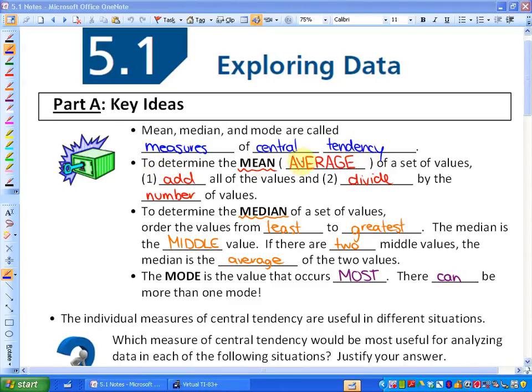To determine the mean, another word for mean is average, of a set of values, what you do is you add all the values and then divide by the number of values. The median of a set of values orders the values from the least to the greatest, and the median is the middle value. If there are two middle values, the median is the average of those two values. And finally, the mode is the value that occurs the most. A way that I remember that is that it starts with MO and so does most, so mode is most. There can be more than one mode.